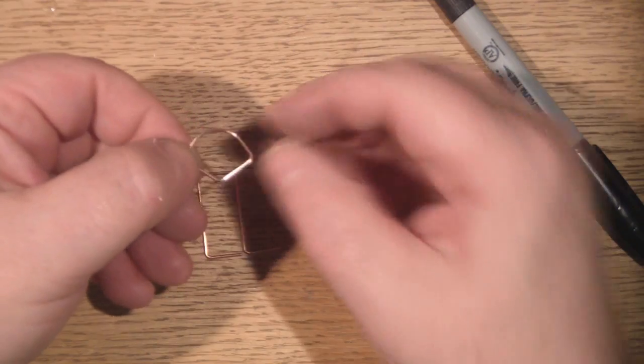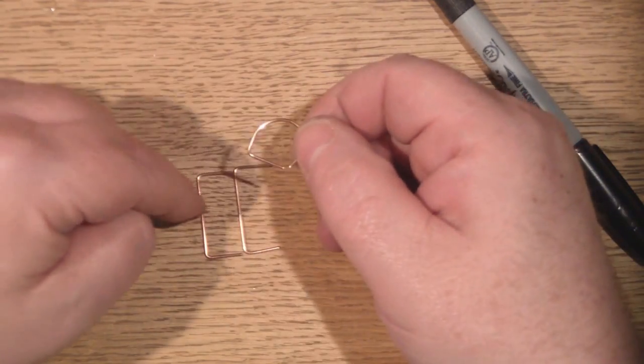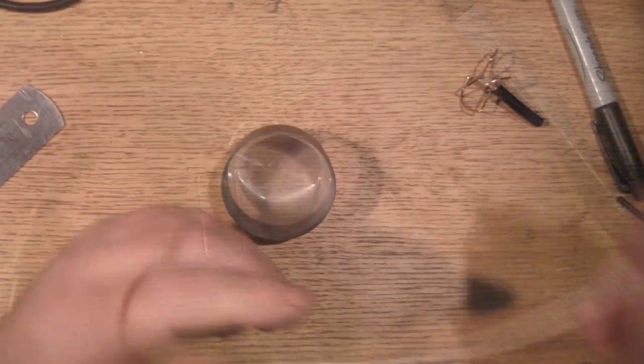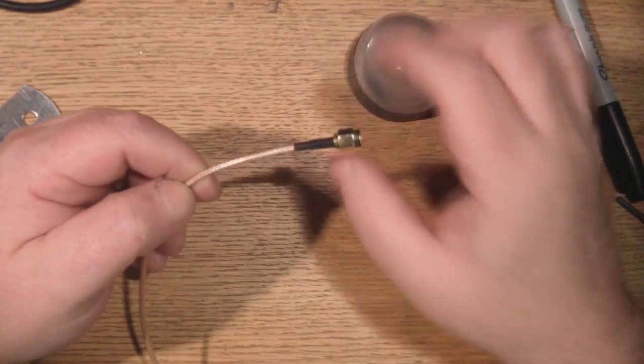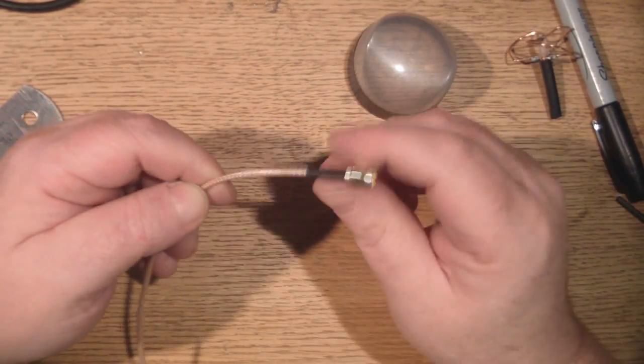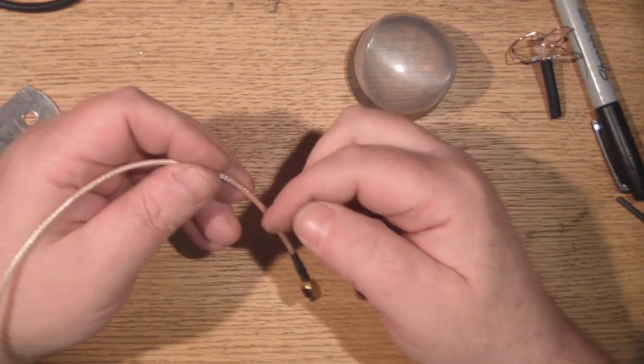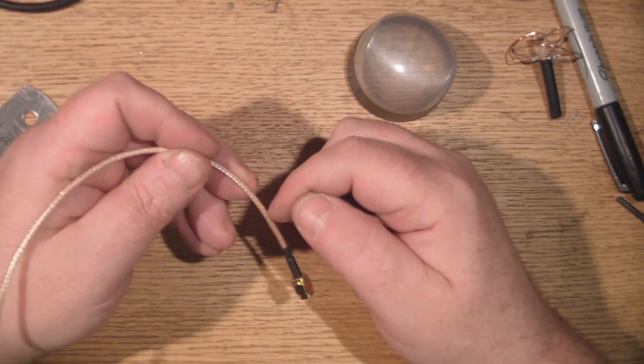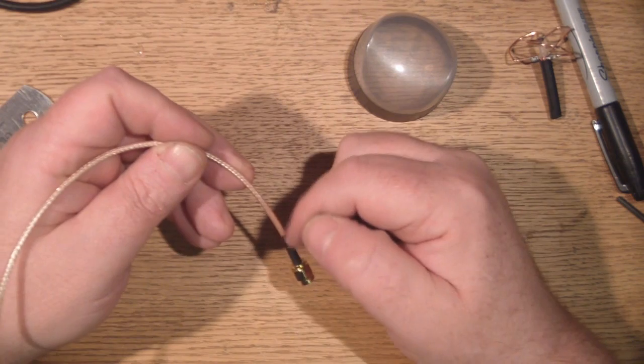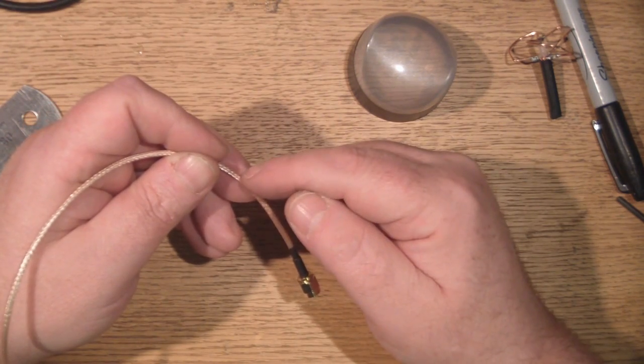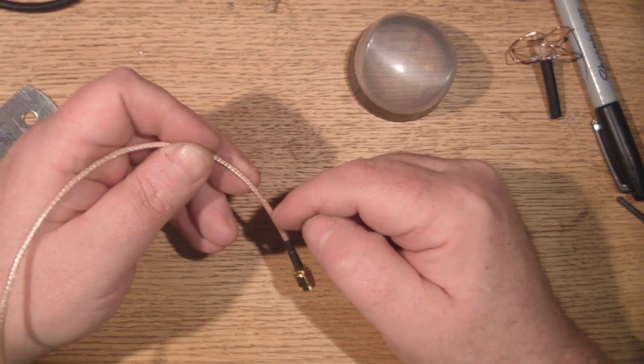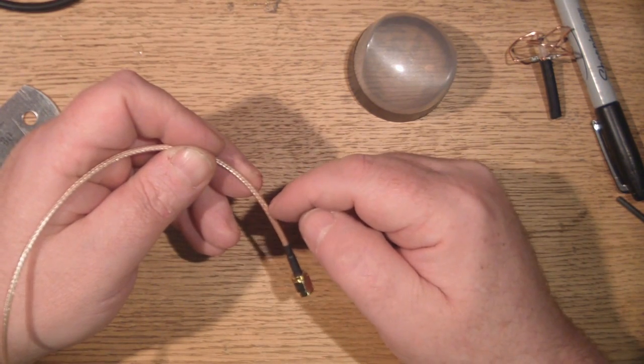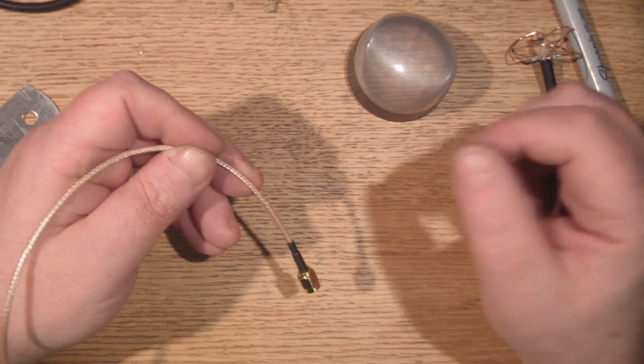Before I start constructing the antenna itself, because I'm putting a housing over this, I want to put the base of that housing through here and then construct the antenna on top. Otherwise I won't be able to get it on because I only want a hole in there as wide as the actual cable itself.